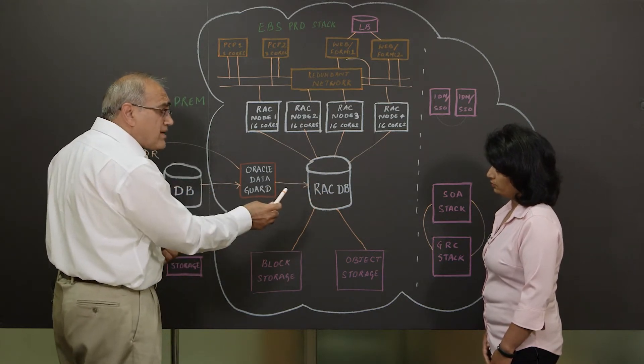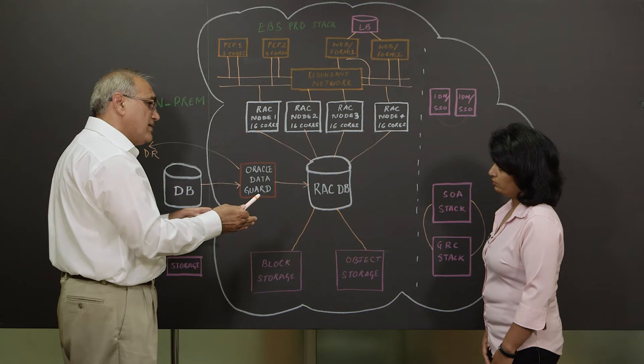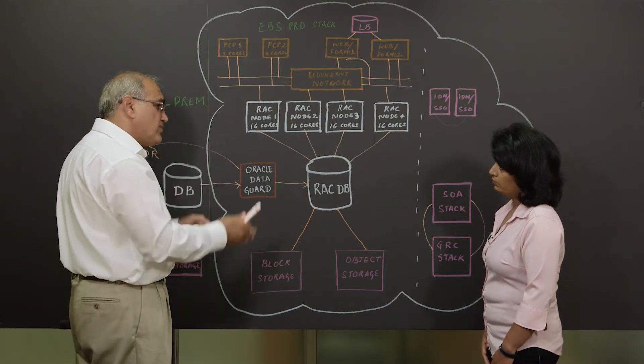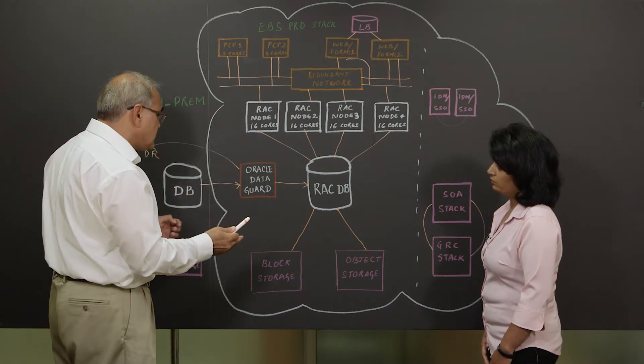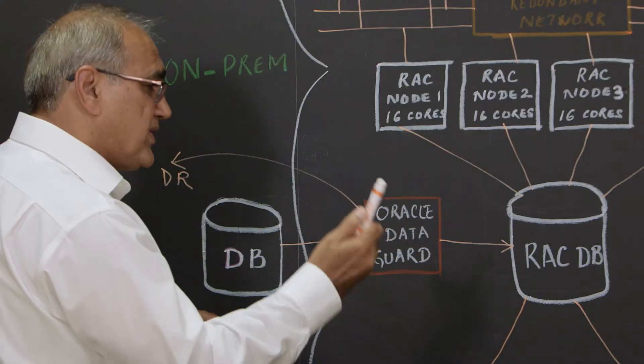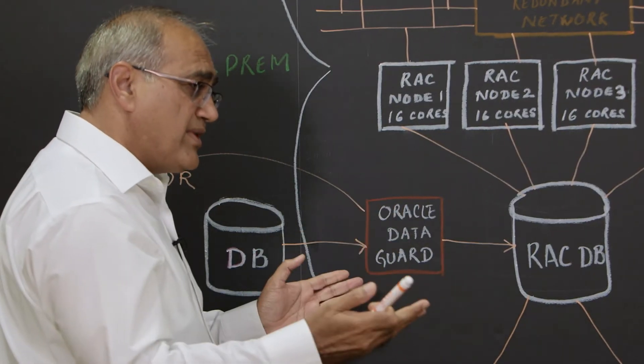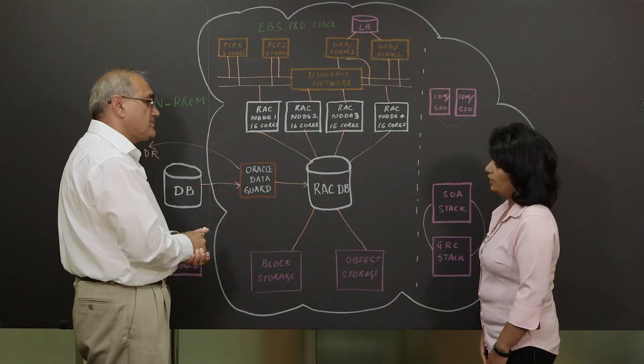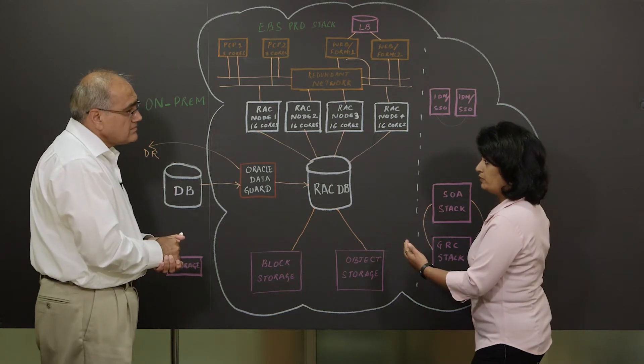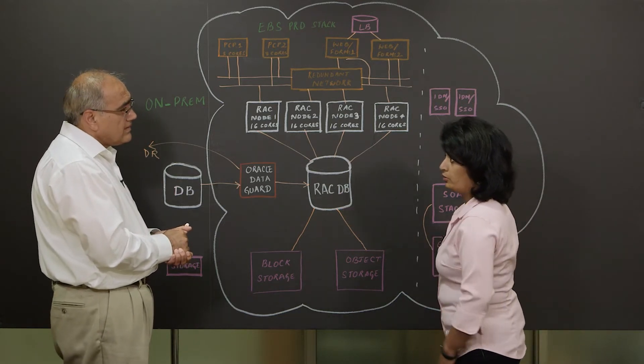And this, of course, happened multiple times during the course of the project as we went through various cycles and various iterations. So we ended up with our final product of EBS-PRD, which was ready to roll out. And then once it went live, you moved Oracle Data Guard out.